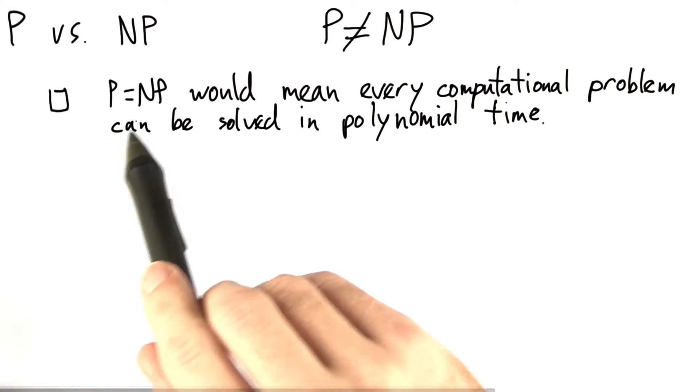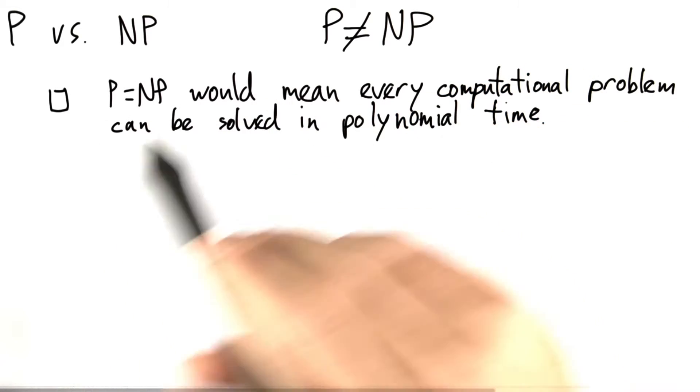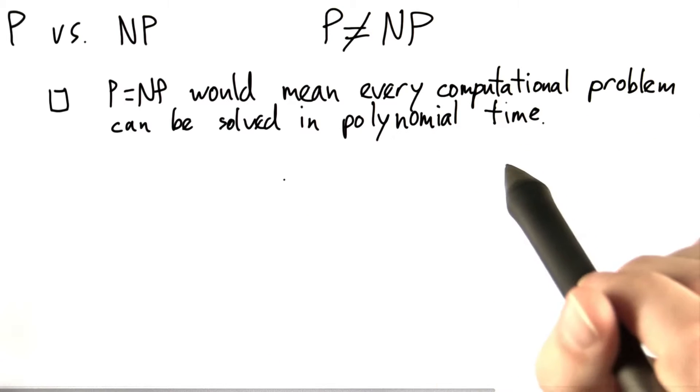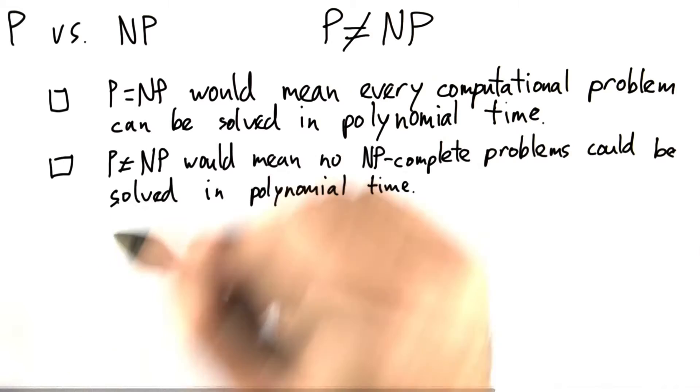So first, it might be the case that if P were equal to NP, then that would mean that every single computational problem could be solved in polynomial time.